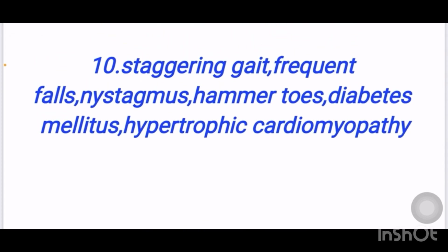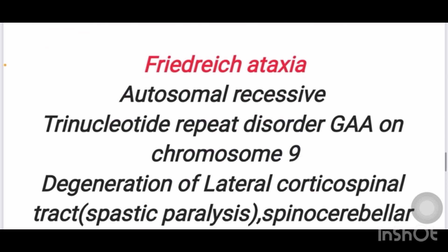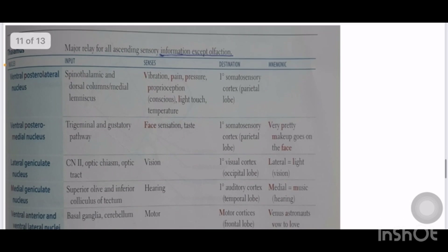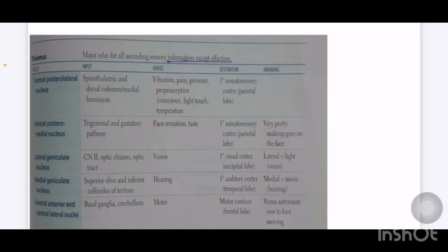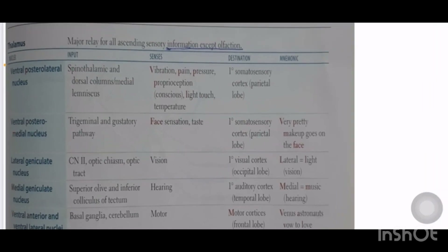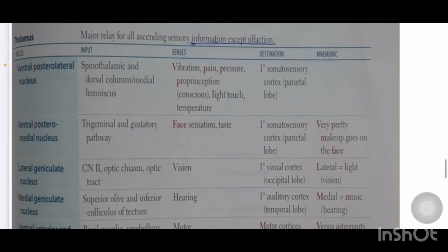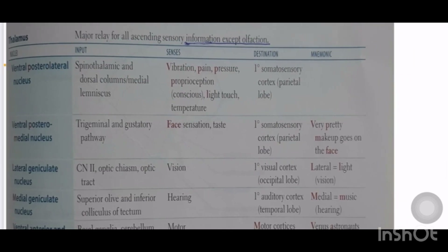Hypertrophic cardiomyopathy and diabetes mellitus lead to Friedreich's ataxia. Now let us look at an important table on the connections of the thalamus. The thalamus is the major relay for all ascending sensory information. All sensory information gets relayed in the thalamus except olfaction — olfactory neurons do not have any relay in the thalamus.